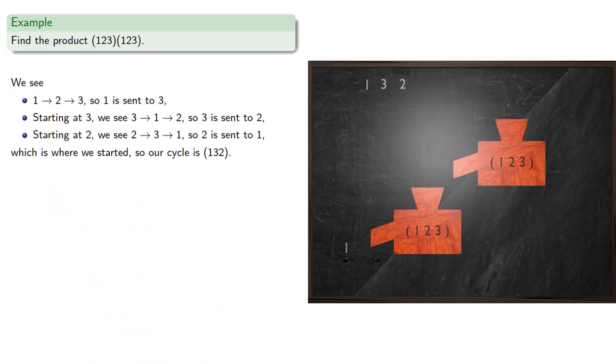Now since this is all elements that could be permuted by these cycles, we're done. And so the product (1,2,3) by (1,2,3) is the cycle (1,3,2).